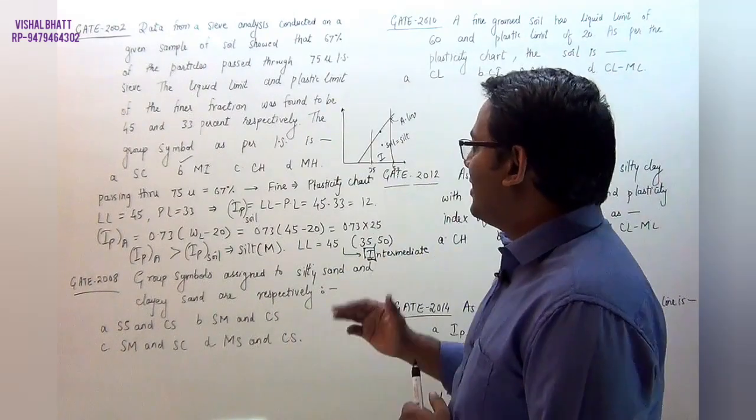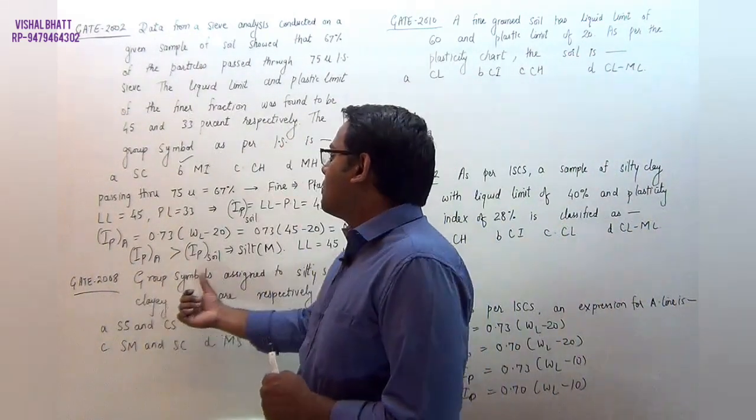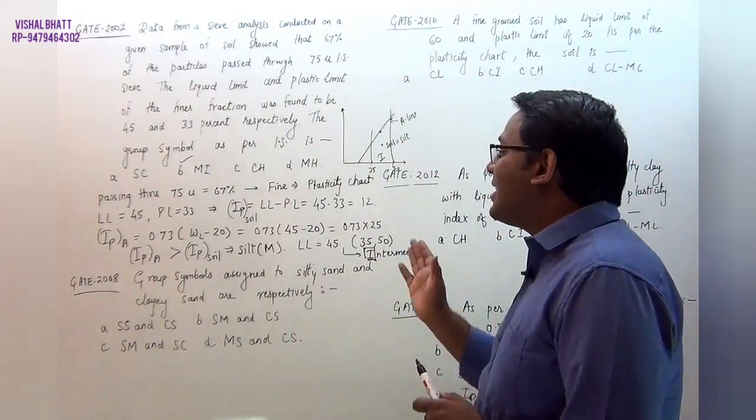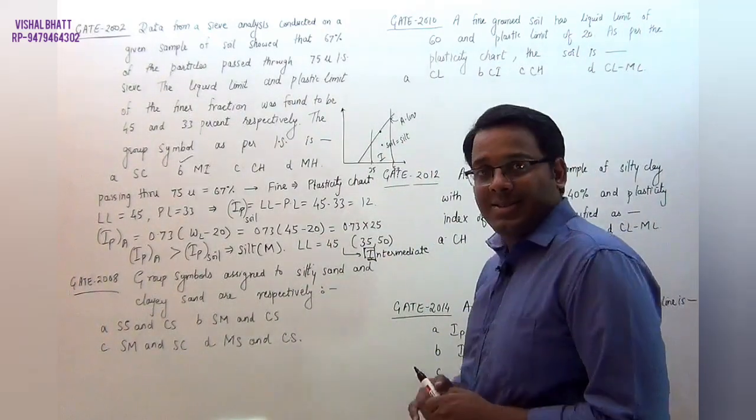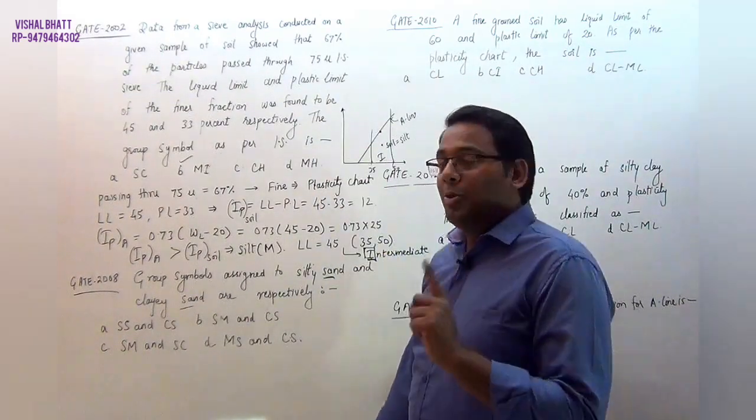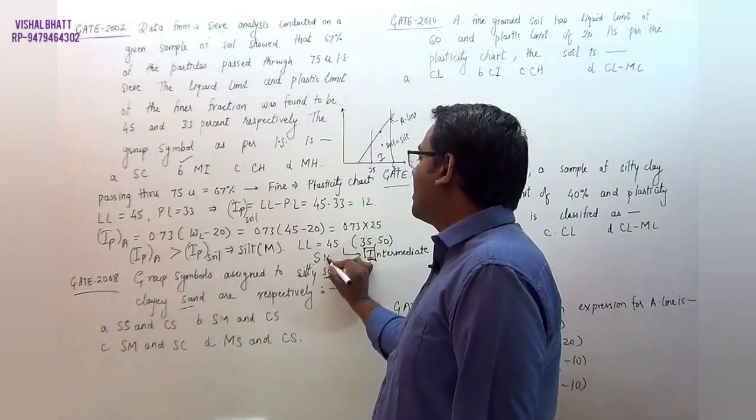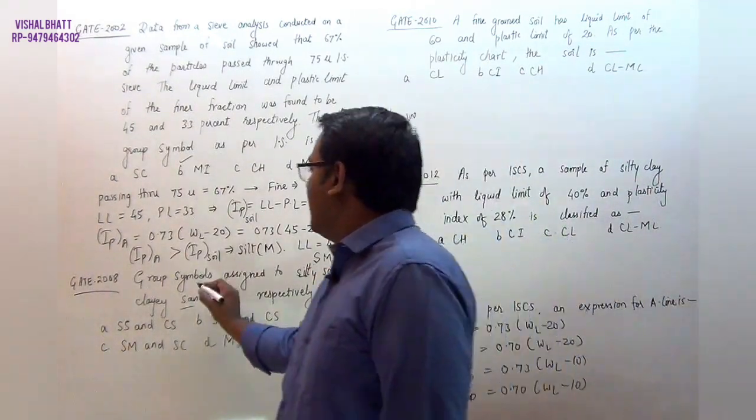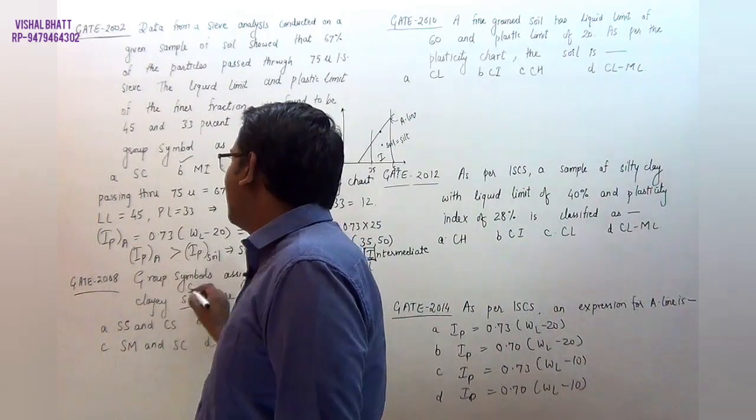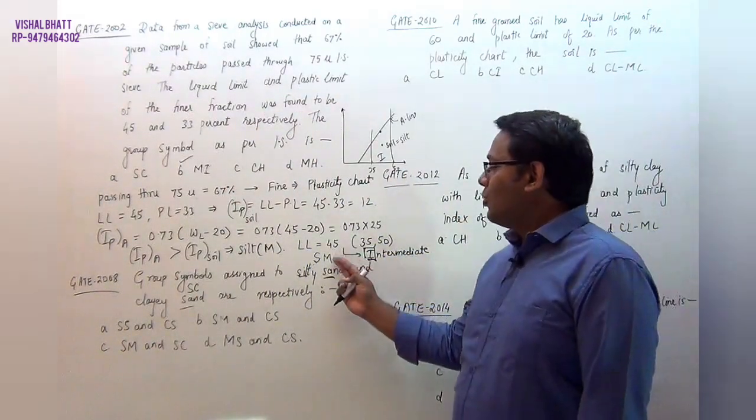Second question is a similar question. Group symbol assigned for the silty sand and the clayey sand is. Here we write sand. But silty is silt, which means SM, and clayey sand means SC. So the answer should be SM and SC, which is option C, the correct answer.